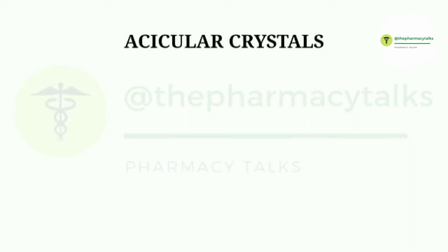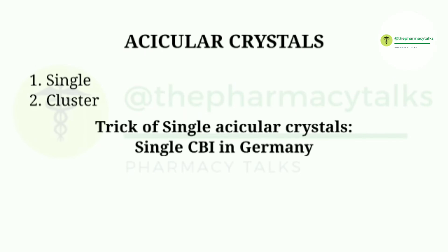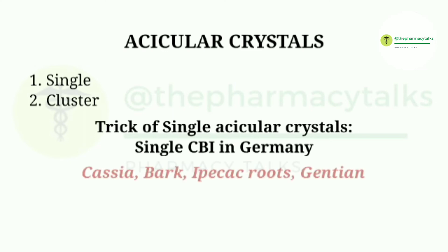Last but not the least type is acicular crystals. It is further classified into two types: single and cluster. The trick to remember single acicular crystals is 'Single CBI in Germany.' It includes kassa bark, ipecac roots, and gentian.